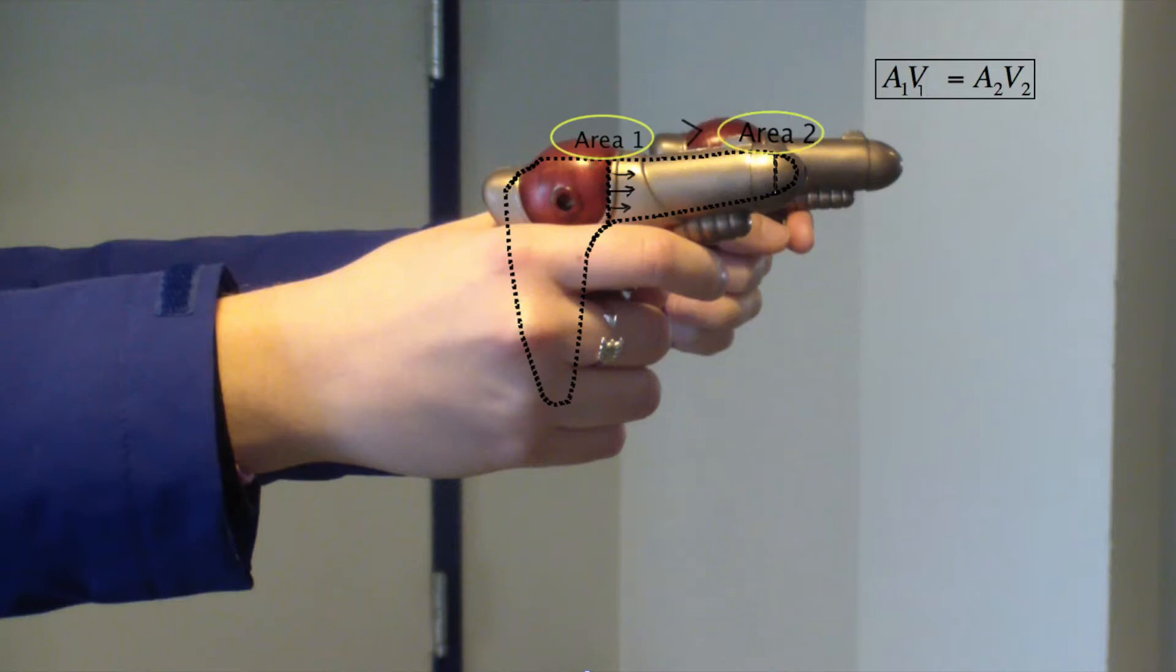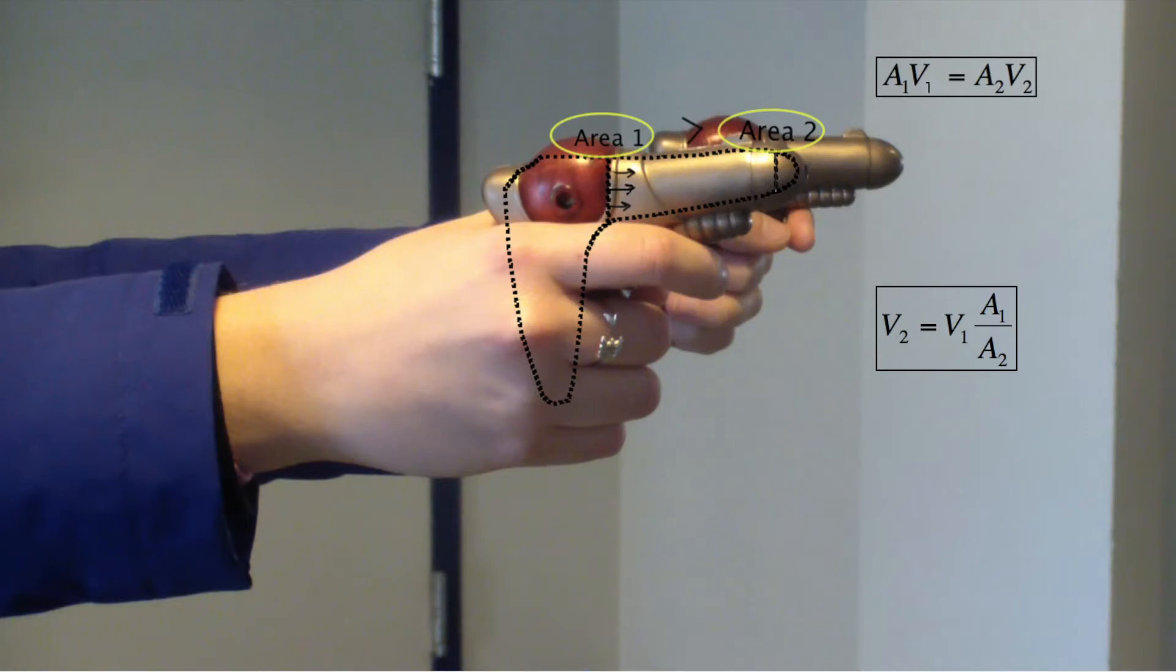Rearranging the equation, we get that the velocity of pulling the trigger is amplified by a factor of A1 over A2, to give the velocity of the output stream of water.